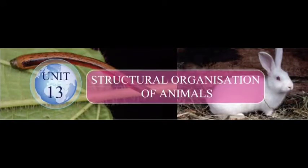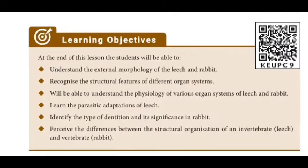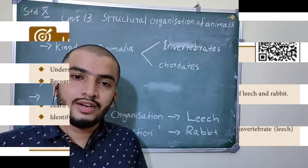Unit 13: Structural Organization of Animals. At the end of this lesson, students will be able to understand the external morphology of the leech and rabbit, recognize structural features of different organ systems, understand the physiology of various organ systems, learn the parasitic adaptations of leech, identify the type of dentition and its significance in rabbit, and perceive the differences between the structural organization of an invertebrate and a vertebrate.